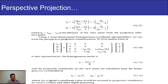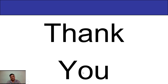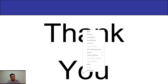The projection coordinates on the view plane are calculated from the homogeneous coordinates as xp = xh / h and yp = yh / h. The original z coordinate value is retained in the projection coordinates for visible surface detection and other depth processing. This concludes today's lecture.